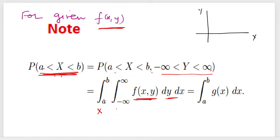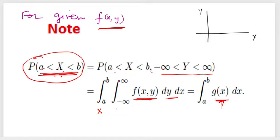The other approach is: if the marginal density function g(x) is already calculated and we need to find the probability of x from a to b, we simply pick g(x) and integrate it from a to b as a single integration. In the same manner we can do it for y also.